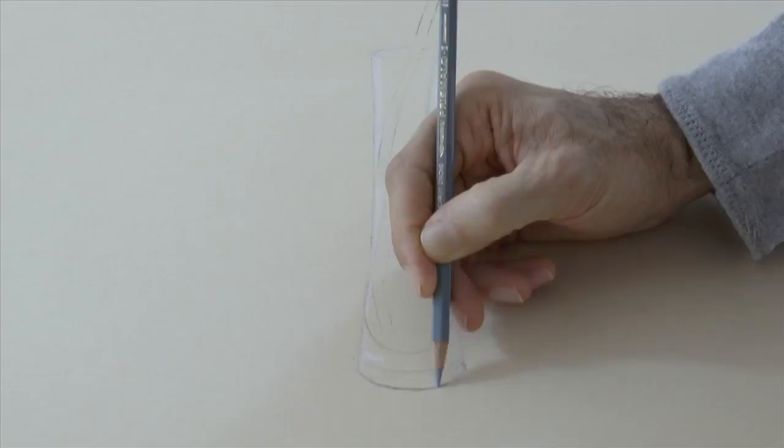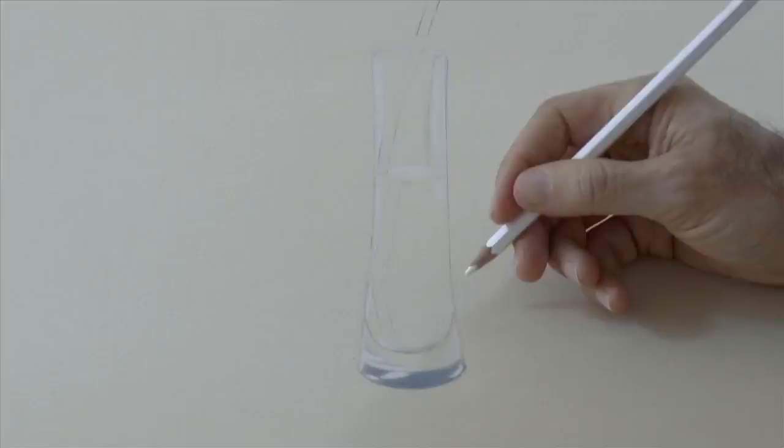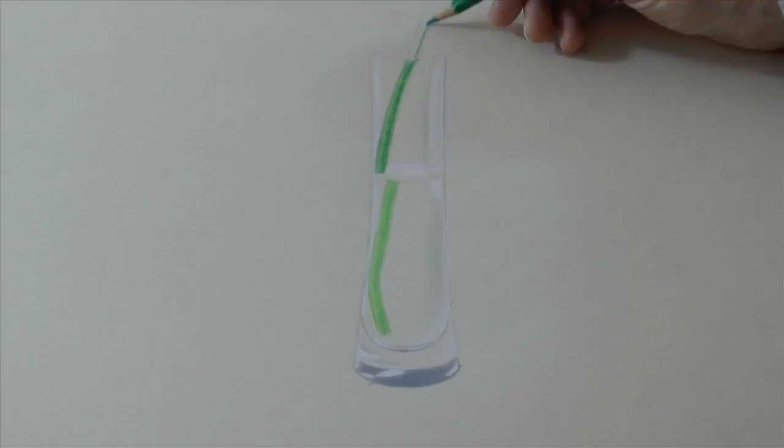When we have the form of our drawing, we can erase all the lines and start coloring or shading. In this case I am using watercolor pencils. The complete list of materials is in the information below the video. For now I am using them dry.